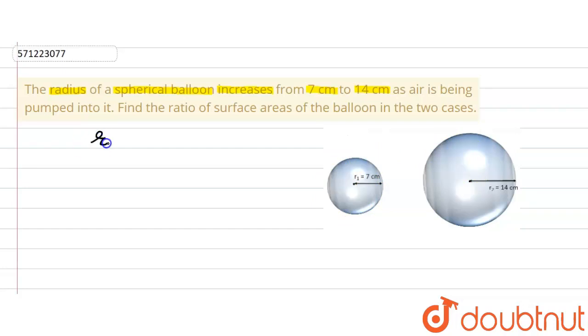Let the radius of the non-pumped balloon initially be R1 equals 7 cm. When the air is pumped, the radius R2 becomes 14 cm.